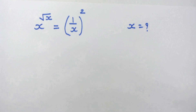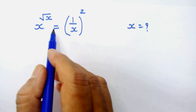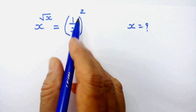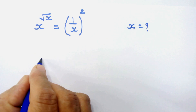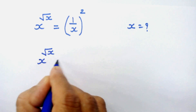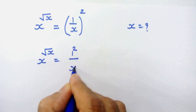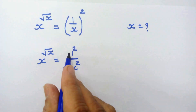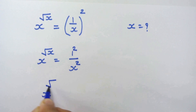Hello friends. We have x raised to the power of square root of x, equal to 1 upon x whole squared. Let's solve for x. First, we will open this bracket, so we have x raised to square root of x is equal to 1 squared upon x squared.